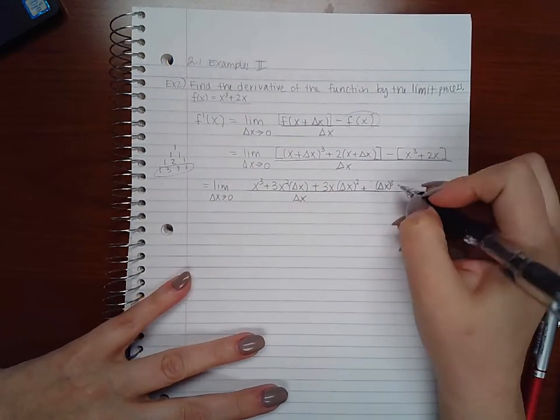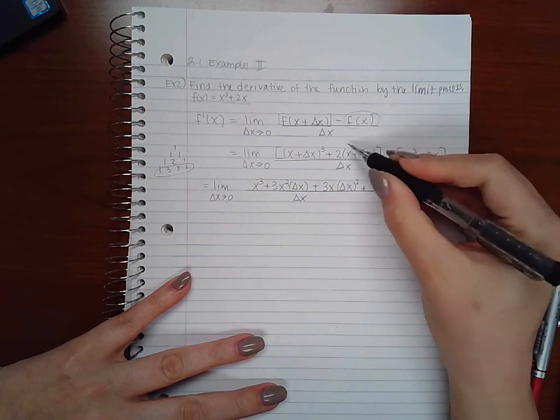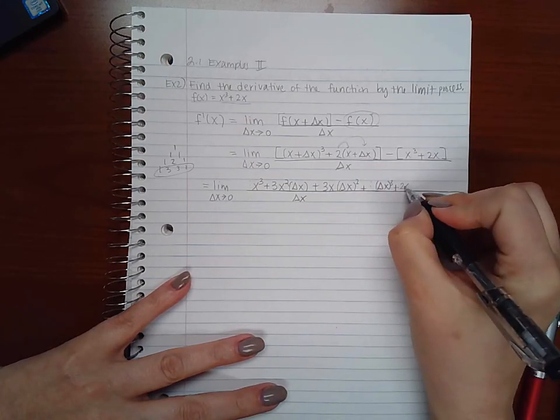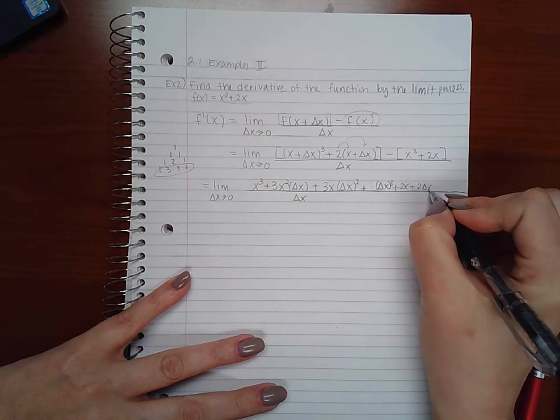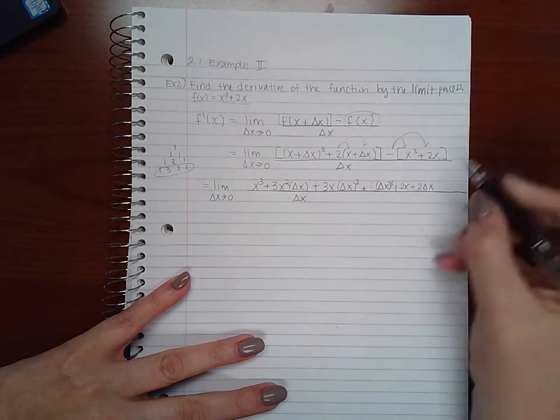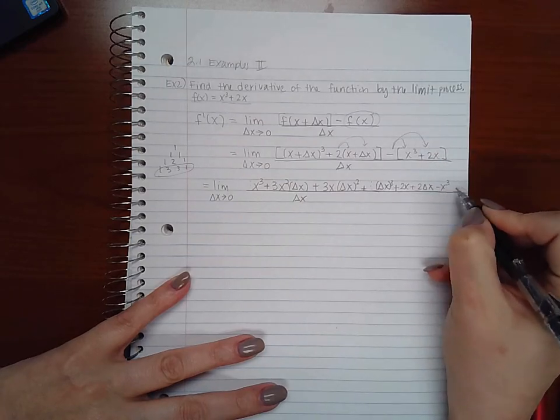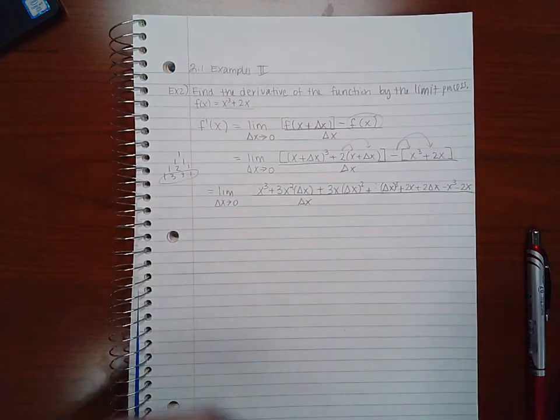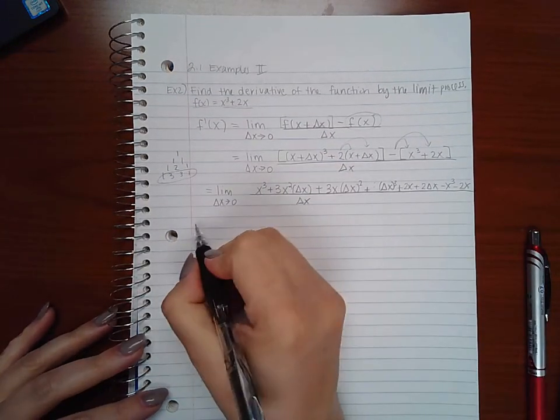Now I am running out of room here, but I do need to distribute this positive two here, so two x plus two delta x. And then I'm going to also distribute this minus to these two terms, so minus x cubed and minus two x, all over delta x.